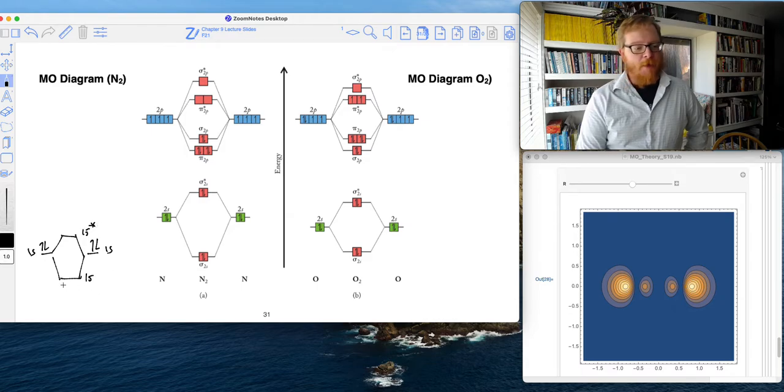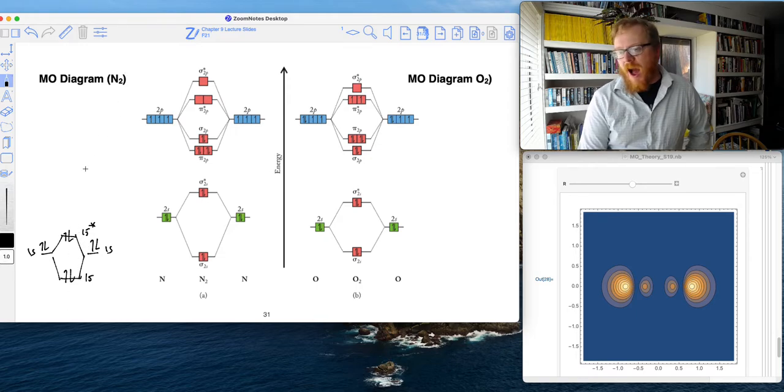So that means we would get in our 1 sigma and our 1 sigma star—that'd be 1 sigma 1S, right? We would have one, two, three, four. At first you think, well, why does nitrogen form a bond? Shouldn't that all cancel out?